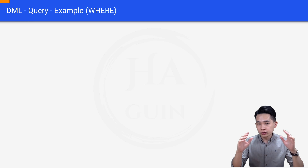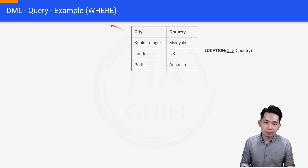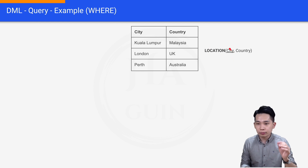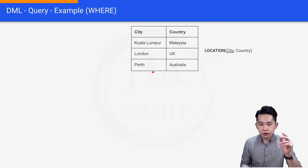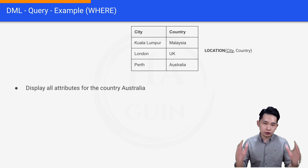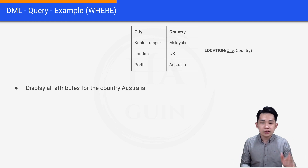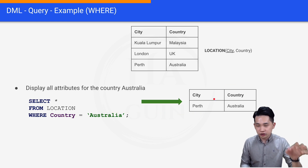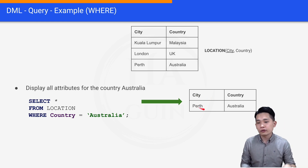Now let's look at an example using the WHERE clause. This is the sample table — we have the city column and the country column. For example, Kuala Lumpur and Malaysia, London and UK, Perth and Australia. The first question is: display all attributes for the country Australia. When they say all attributes, it means all the columns. So the easiest way is SELECT star — SELECT * FROM location WHERE country = 'Australia'. The result selects everything related to country Australia, which gives us city Perth and country Australia.